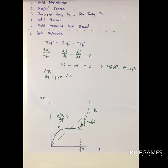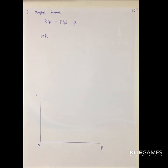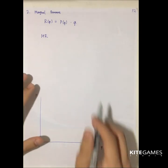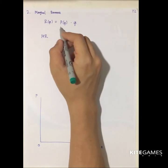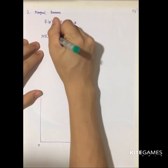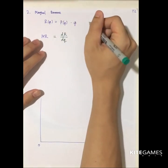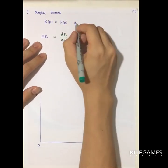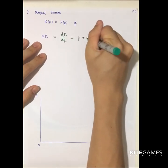Now let's look at the concept of marginal revenue. Since we have already taken care of the cost, we are going to examine the revenue. The revenue function is price times quantity — the price of each good times the number of goods sold is total revenue. Marginal revenue is simply dR/dQ, which equals p plus q times dp/dQ.